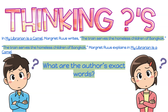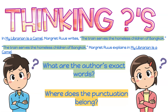Now that we've identified the words found in her text, where does the punctuation belong? Remember, we need periods, quotation marks, and even some commas. Can you identify where they go? That's right — we have the comma separating the text we're quoting from the source, and we have quotation marks around the exact words the author said, making sure to include punctuation inside.